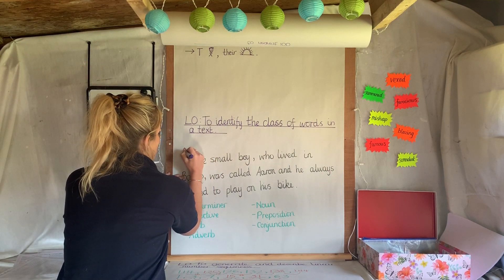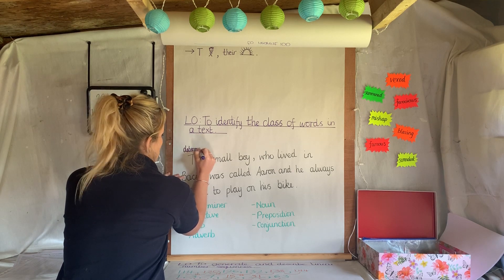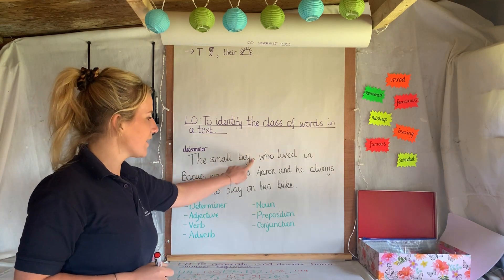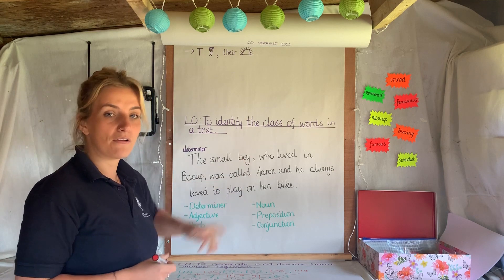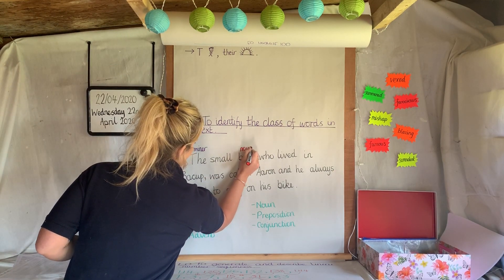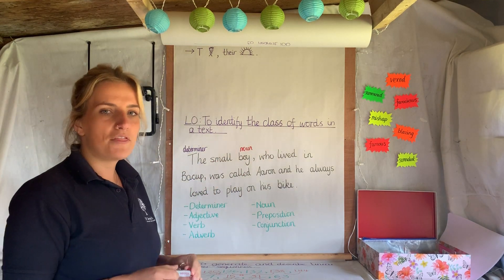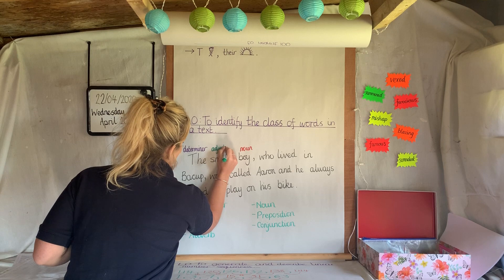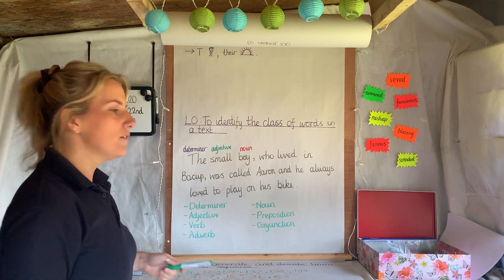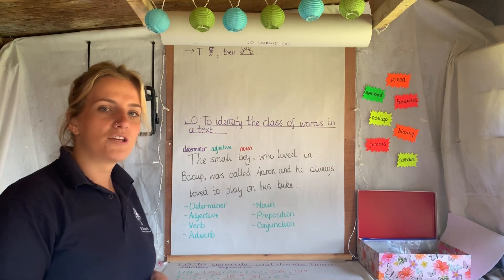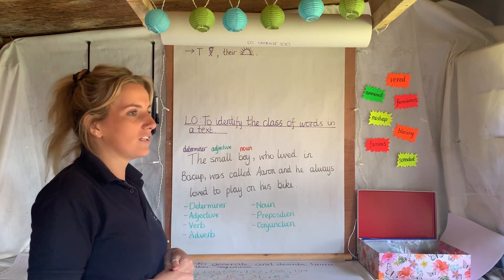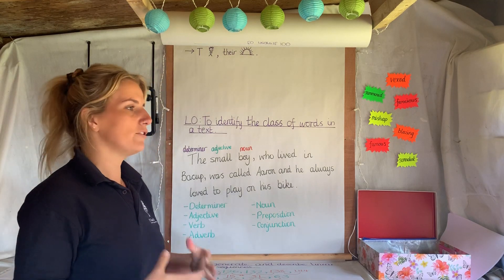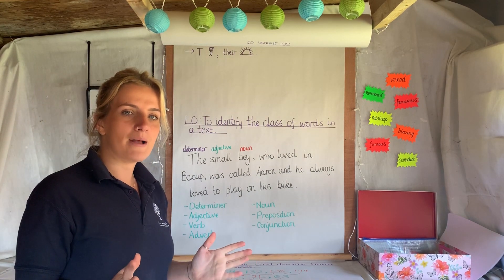Just above it, you can write 'determiner' in your book — or underneath it, it doesn't matter. We know that 'small' — if small is describing a noun, and a noun is a person, a place or a thing — then if something is describing the noun, that is an adjective. So I'd like you to go through those. Send me your work via email and I'll get back to you whether you've got it right or wrong. If there are any you're not sure about, leave it blank, because there are a couple of tricky ones — for example, 'always'. Have a look, try and work it out. If you don't know it, don't worry. Send me an email and we'll go through it together.